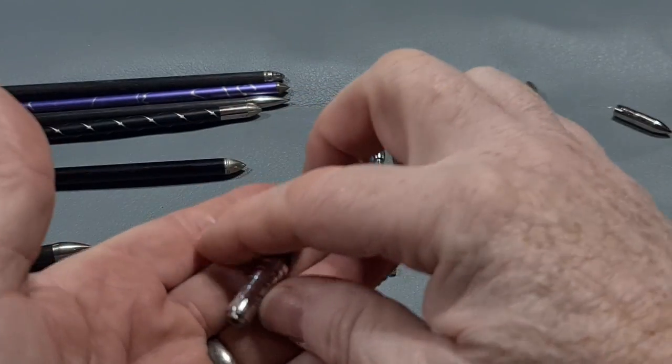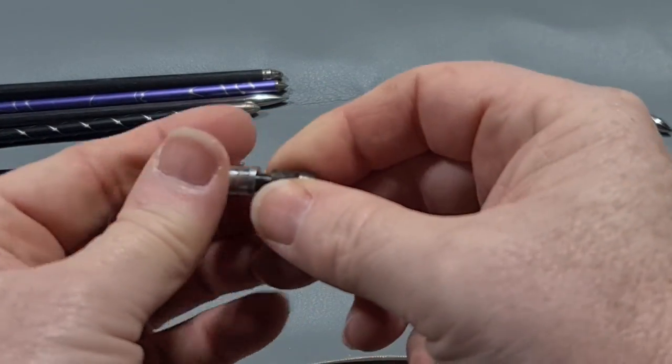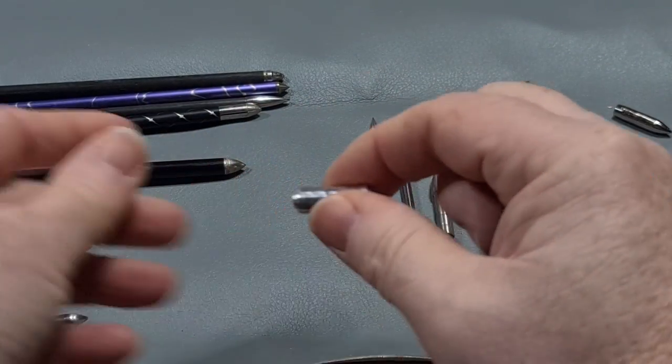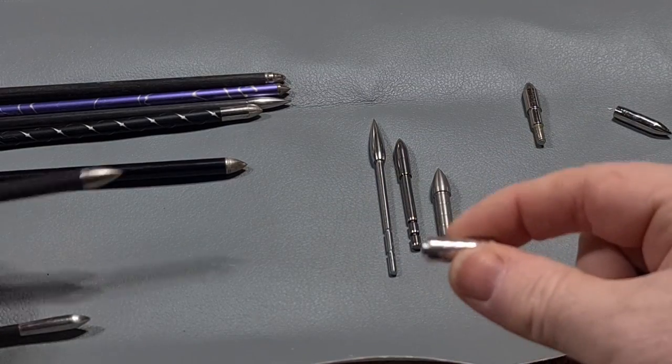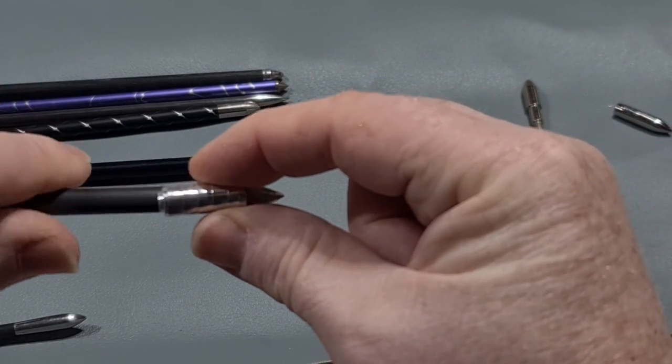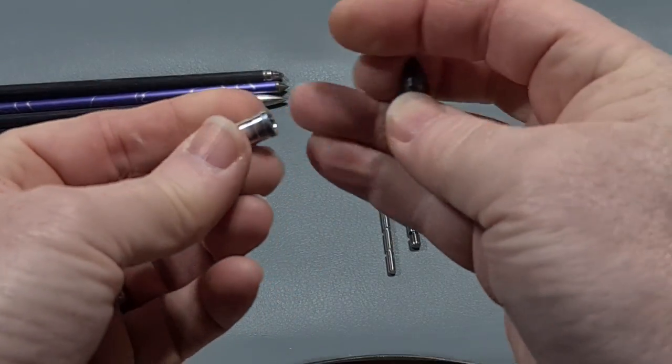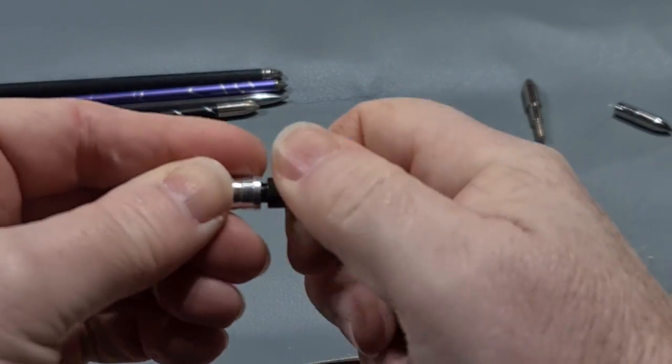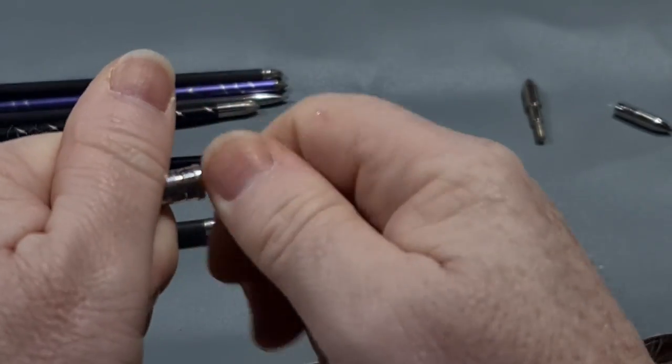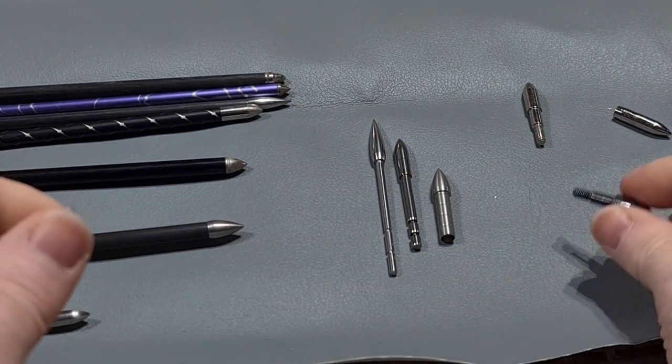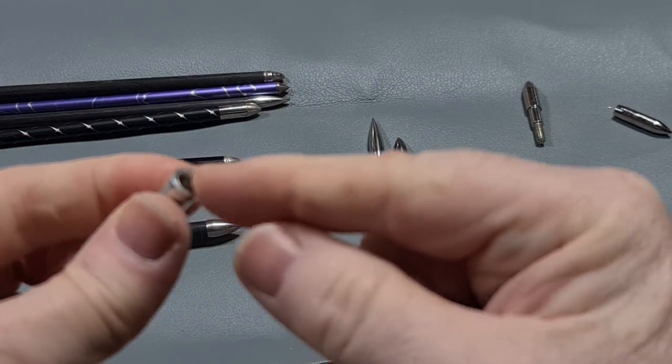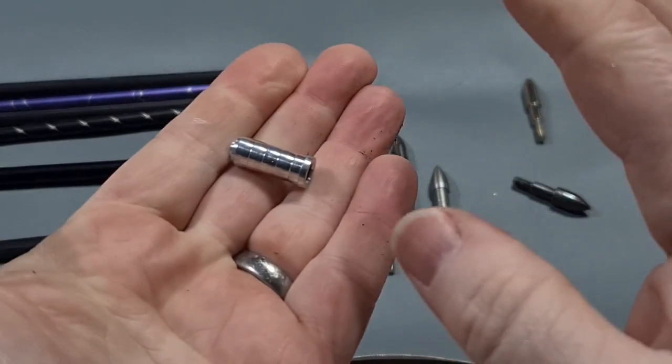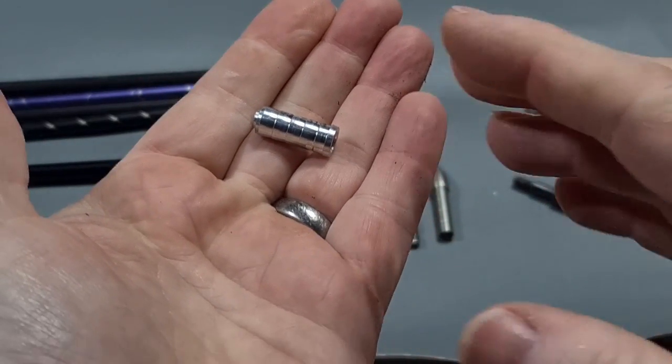And then you've got this type. This is a field point and what makes field points good is you have to put this insert inside the arrow. So it would slide up inside like that. You glue it in place and then you can screw the point in. Why is that such a good thing? Well, you can then use these arrows, you can take that out and put a broadhead in there and use them for hunting and it's threaded inside. It's just a piece of aluminium.